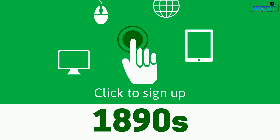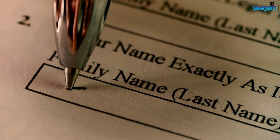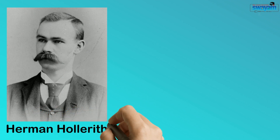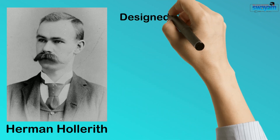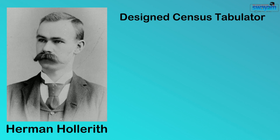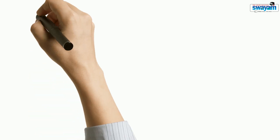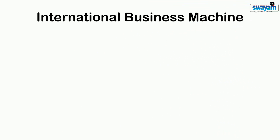1890s. You are familiar with census. The history of tabulation of census data dates back to 1890s when Hermann Hollerith successfully designed the first electromechanical machines known as the census tabulator. This machine used to read census data from punched cards and also check the results. Later on, Hermann formed his own company called the Tabulating Machine Company in 1924, which was later renamed as International Business Machines, or more popularly known as IBM today.